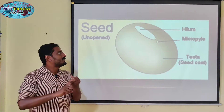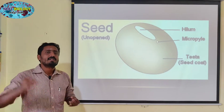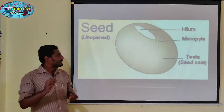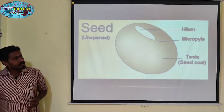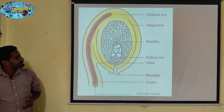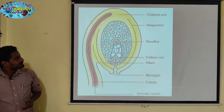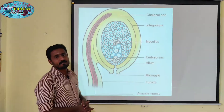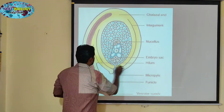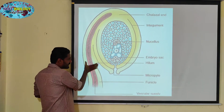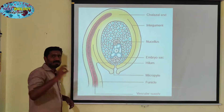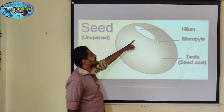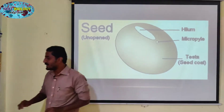One is the funicle. The ovule is a place. This part is the ovule. This is the hilum. Here is the detached part. This is the seed stage. Funicle and the hilum — that part is over.